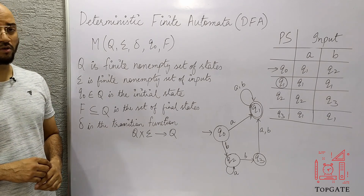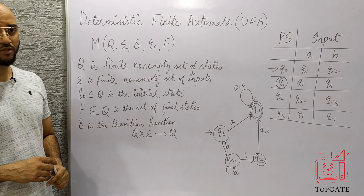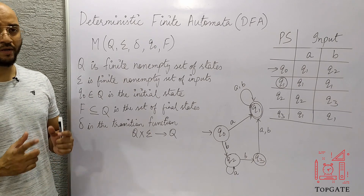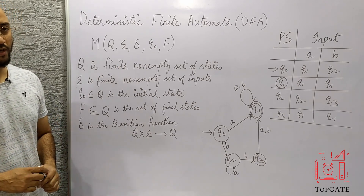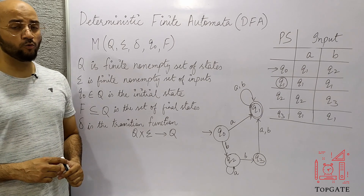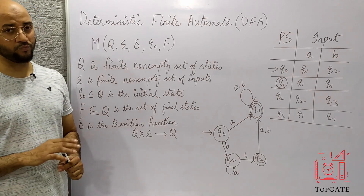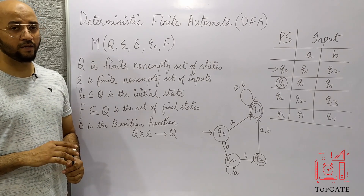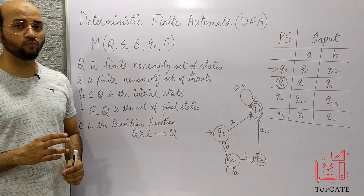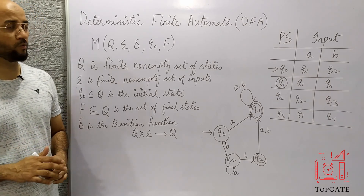There are two kinds of finite automata. One is finite automata with output, and one is finite automata without output. In finite automata with output, we have two machines, namely NFA and DFA. And in finite automata without output, we have two machines, that is Mealy and Moore machines.